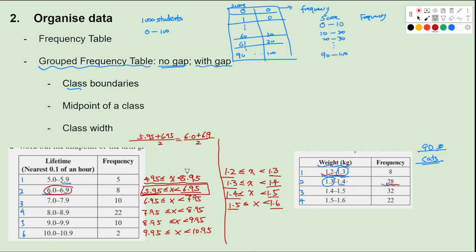Class width is just the upper boundary minus the lower boundary. For the gap table, it's 5.95 minus 4.95, which is 1. For the no-gap cat table, it's 1.3 minus 1.2, which is 0.1. Usually grouped frequency tables have equal class widths, but sometimes different classes may have wider or narrower ranges depending on the type of data.